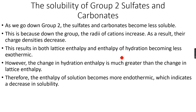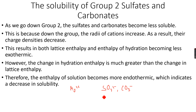However, the change in hydration enthalpy is much greater than the change in lattice enthalpy. This is because the cation, such as Mg²⁺, is small, but the anions — SO₄²⁻ and CO₃²⁻ — are really large ions. The sulfate ion consists of 5 atoms total: 1 sulfur and 4 oxygen atoms. The carbonate ion consists of 4 atoms: 1 carbon and 3 oxygen atoms. Since these anions are much bigger than the cations, the change in hydration enthalpy is much greater than the change in lattice enthalpy.